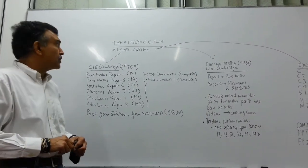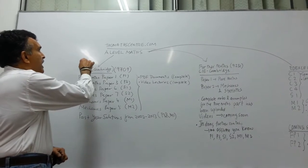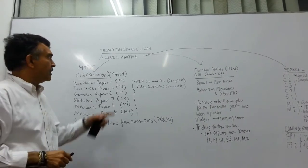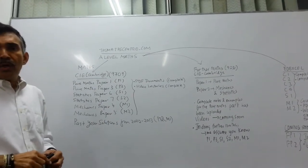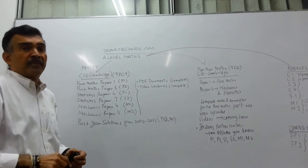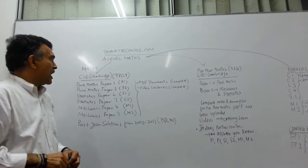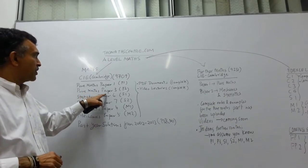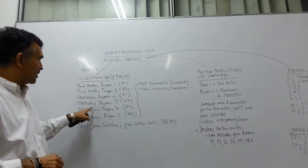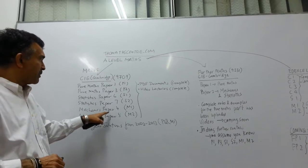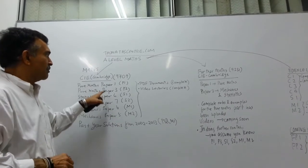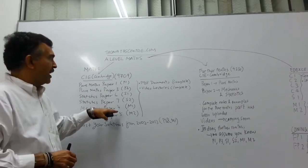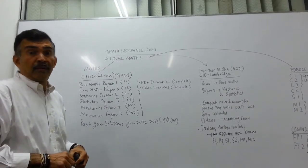Let's start with the CIE exams, the CIE exams. Let's talk about Maths. Now the subject code is 9709. So what do we have on the MathCenter.com website? We have got Pure Maths paper 1, Pure Maths paper 3, Statistics paper 6, Statistics paper 7, Mechanics paper 4, Mechanics paper 5. These are the six main courses that we have put up on the MathCenter website.